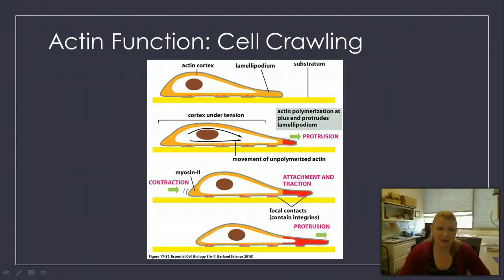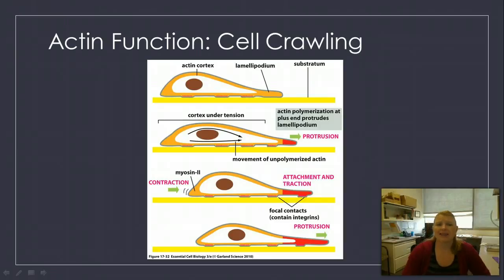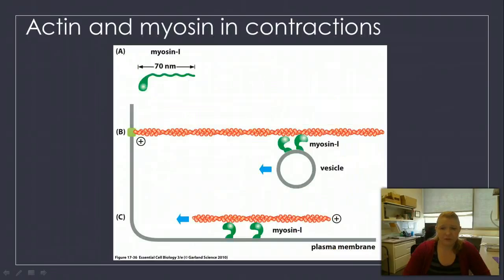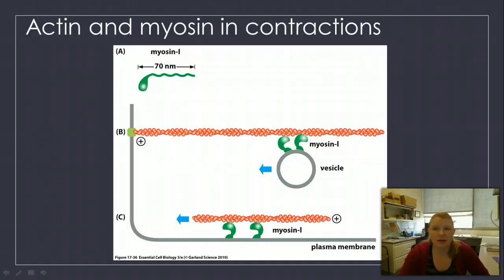You can see that cell cortex here in orange and how it helps cells move. This is really important in immune cells, and in any single-cell eukaryotic cell, this is how they move. Actin also works with myosin to do muscle contractions in our muscle cells, and we're going to talk about this in the next topic.